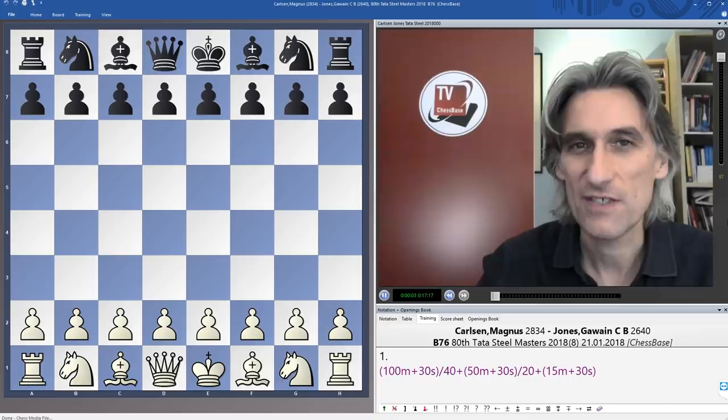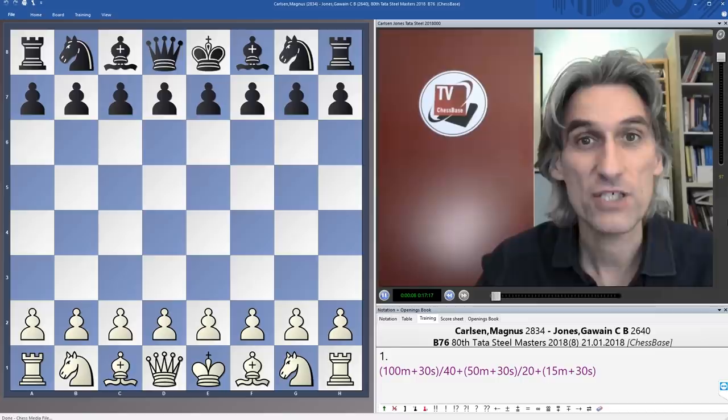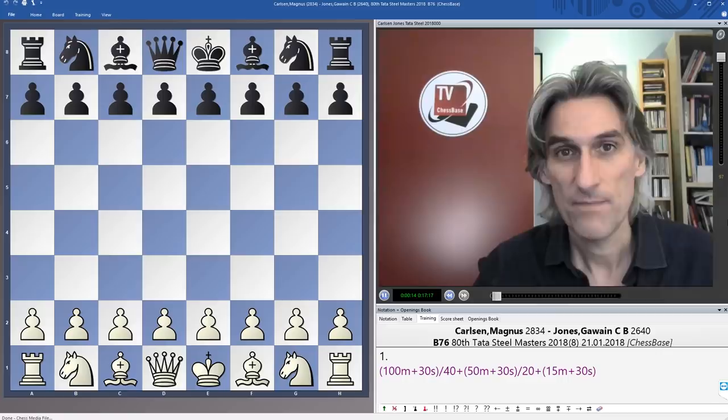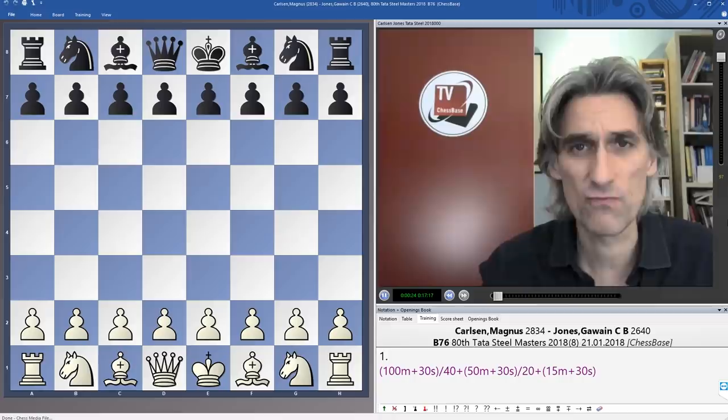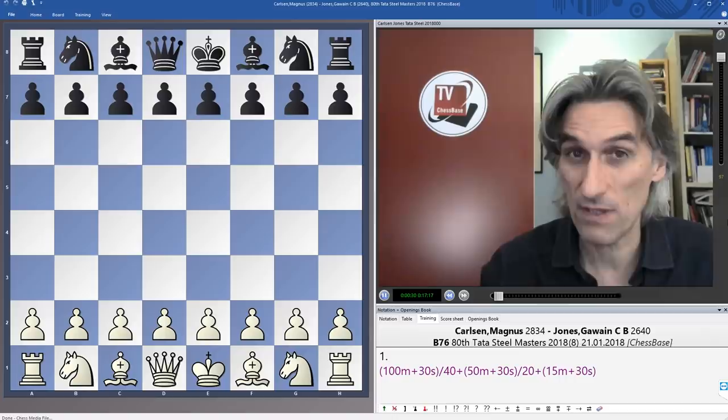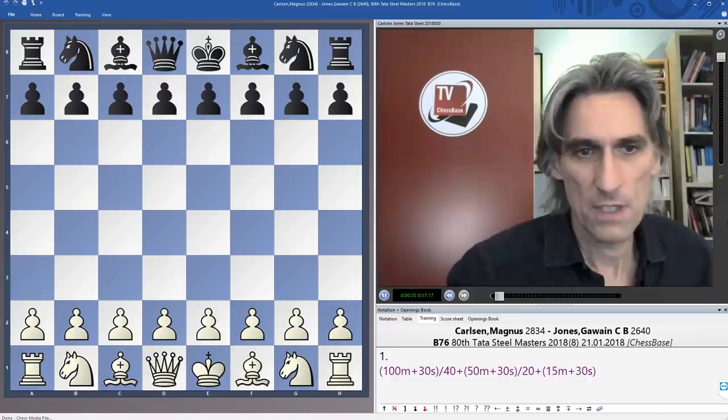Going into round 8 of the Tata Steel Masters tournament, Magnus Carlsen was a point behind the leader, Shakhriya Mamedyarov. In round 8, Carlsen was playing Gawain Jones. On paper, he's one of the weakest players in the tournament, but he's actually having a very good event. Carlsen really had to target him. He was playing with the white pieces, so this was a good opportunity to try and forge forward in the tournament.